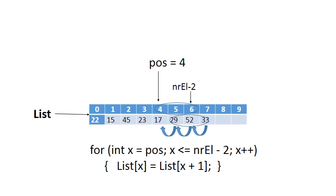We want to delete the element at position 4 in the array. In order to do that, we want to move all the elements to its right one step left. So the elements 29, 52, and 33 will each be moved one to the left. The destination positions of those three elements are 4, 5, and 6 — so 29 will be copied to 4, 52 to 5, and 33 to 6. Notice that 33 is at position 7, which is number of elements minus 1, and it will be copied to position 6, which is number of elements minus 2.